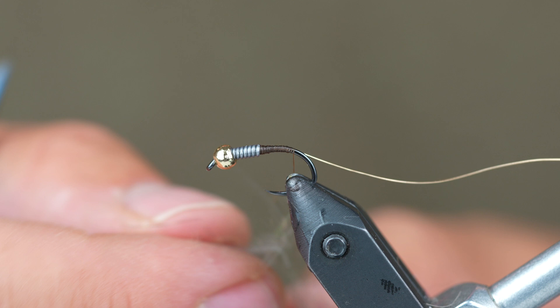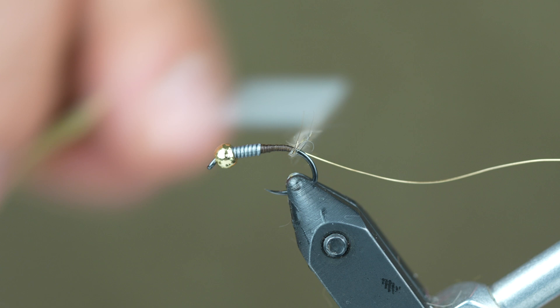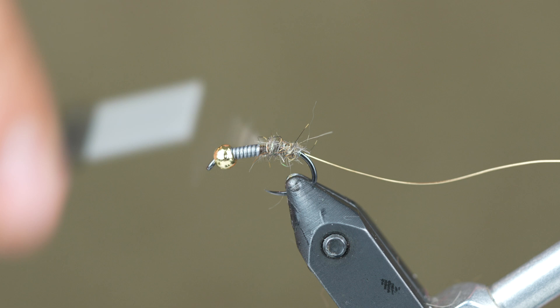I'm going to dub in a fairly decent little rope. This is a size 12 so it does take a bit of dubbing to build up the body properly. We'll start wrapping that forward. Not enough, so I'll add a little bit more.